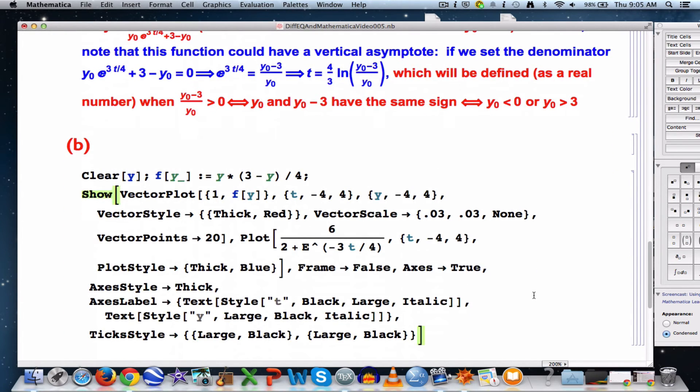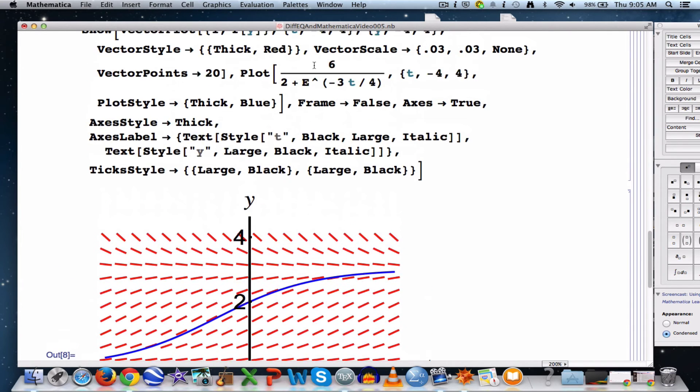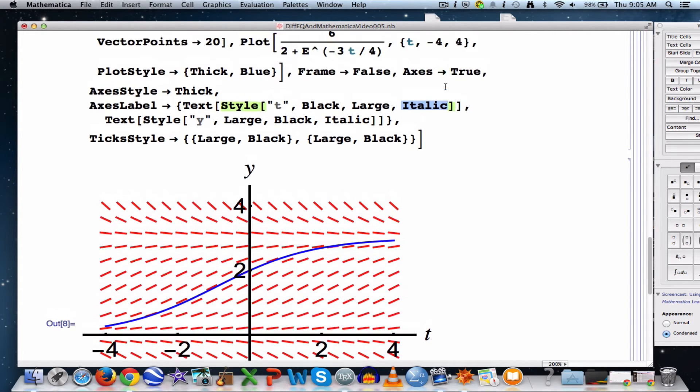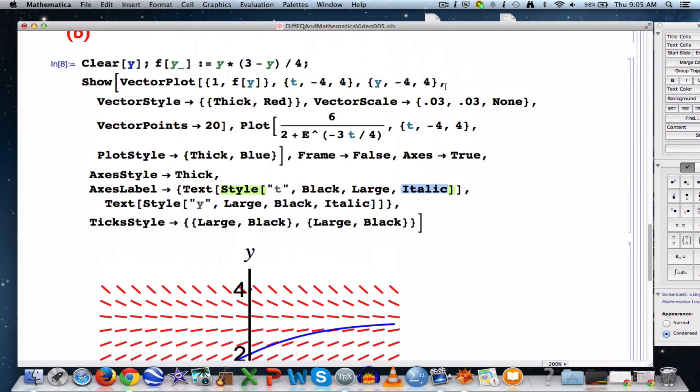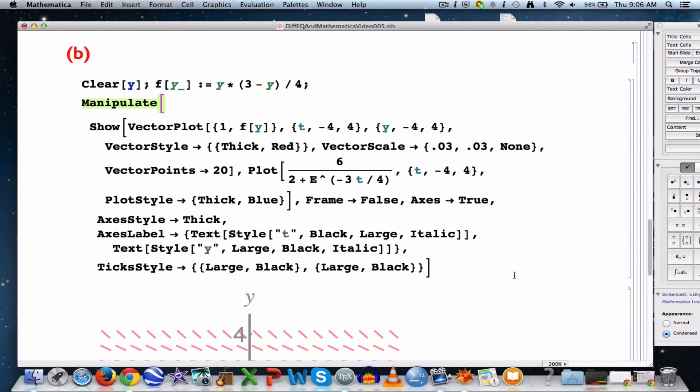This code makes the graph from the solution from the last video, this particular function. I did make a little change from the last video. I used TextStyle black, large, italic to make the axes look a little nicer, especially with the italic. That was a cosmetic change. What we want to do is take all that you see here and embed it as the first argument of Manipulate. I'm going to type Manipulate with a square bracket. I need animation parameters. This whole thing, the Show, is going to be inside Manipulate as the first argument.